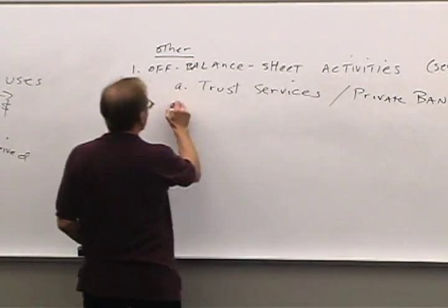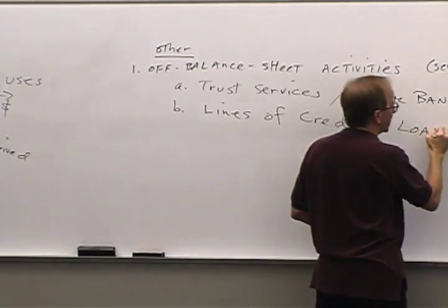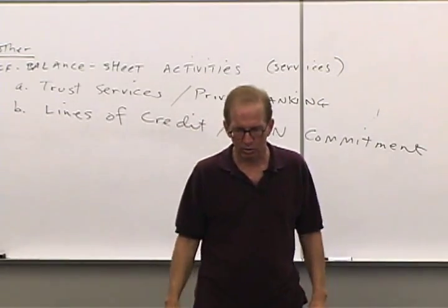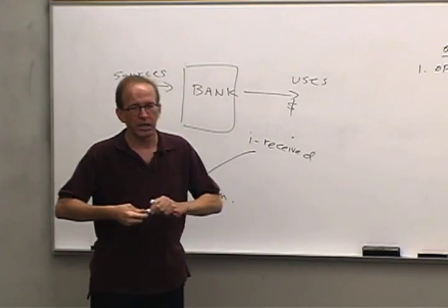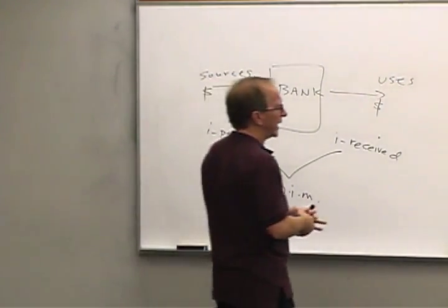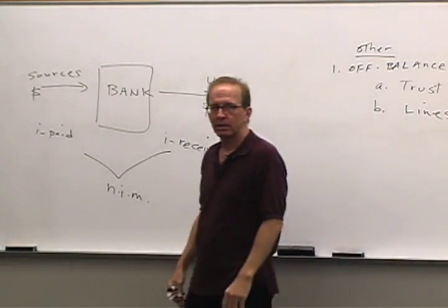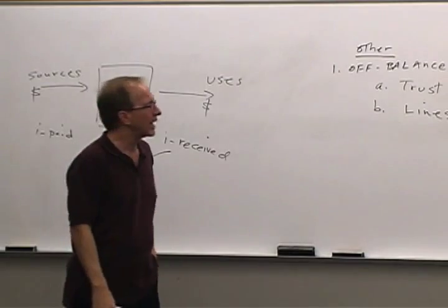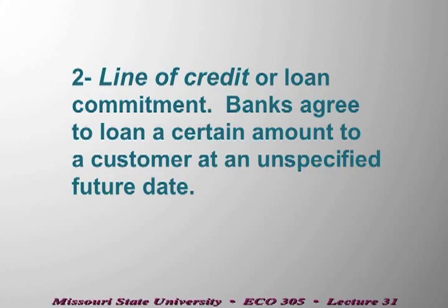Another off-balance sheet service is lines of credit, also called loan commitments. Business customers go to a bank and request a pre-approved loan. The customer goes through the entire application process, fills out all the forms, provides income information, and the bank says yes or no. If yes, the bank makes a commitment to lend up to a certain amount — for a small business maybe $250,000 or $100,000, for a large business perhaps $500 million.